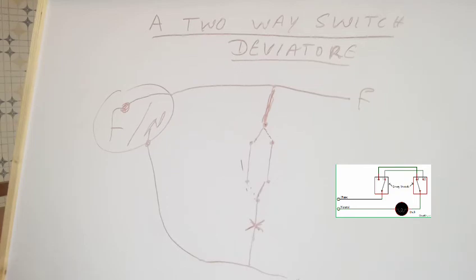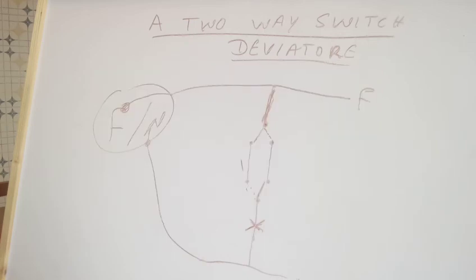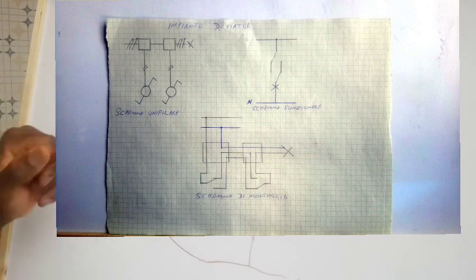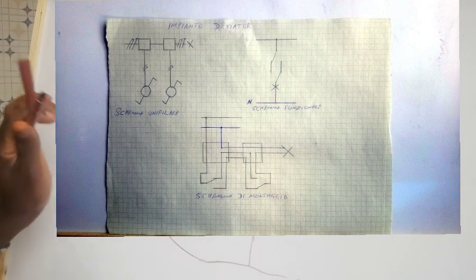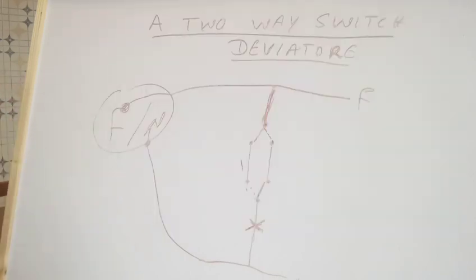Thank you very much for watching. If the diagram is complicated or unclear, feel free to comment and I'll be pleased to explain further. Before this video ends, I'm going to show you the three complete diagrams of the two-way switch: the first is called 'schema unifilare' — the single line diagram; the second is the 'schema funzionale' — the functional diagram, which is the one I just drew; and the third is 'schema di montaggio' — the full complete wiring diagram. I'll leave those on screen for a moment so you can understand them. Thank you very much and see you in the next video!